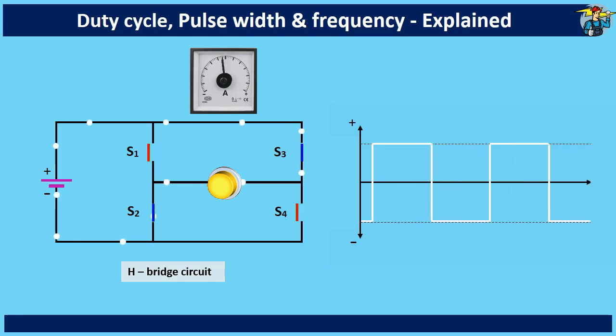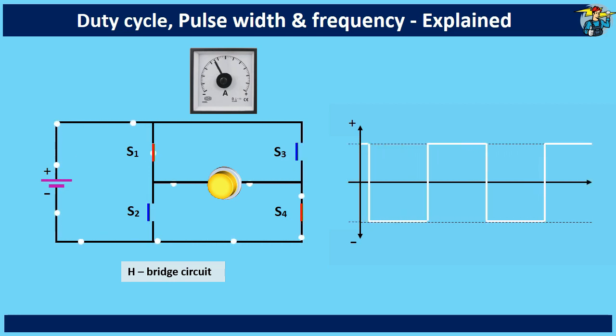If both switches on the same arm are closed simultaneously, it would create a direct path for current to flow from the positive supply to the negative supply, bypassing the load. This would result in a short circuit which could damage the circuit and cause excessive current to flow.